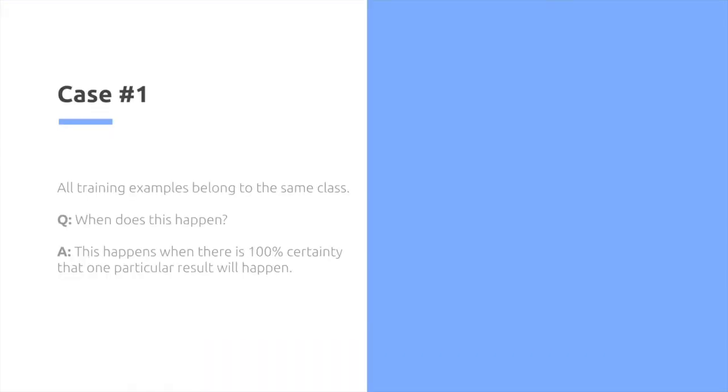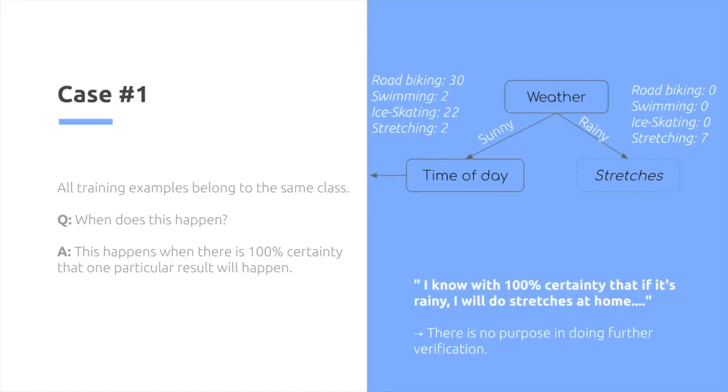So case number one, all the training examples belong to the same class, so we are 100% certain, at least based on our training data, of what the tree would look like. If I look at the weather, and I notice that whenever it's raining, I always only do stretching, I know with 100% certainty that if it's going to rain, I will do stretches at home, at least based on the training data. So there is no purpose in doing further verification.